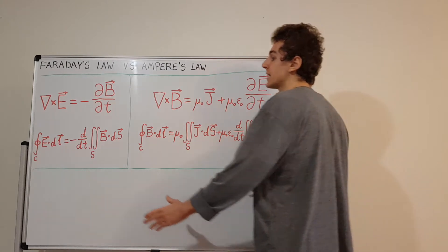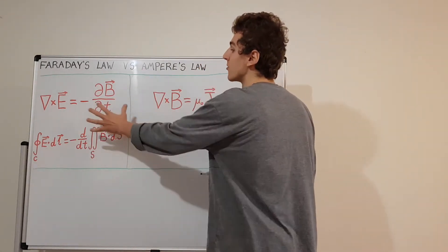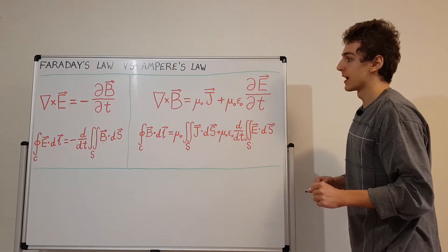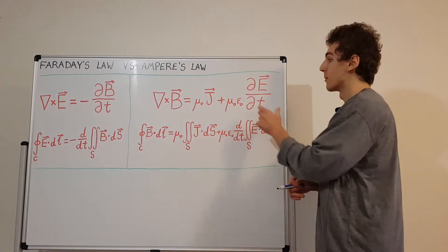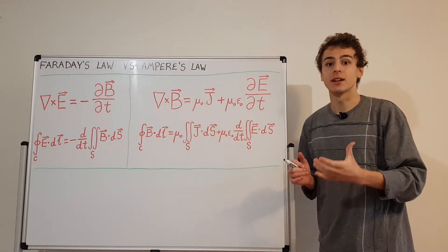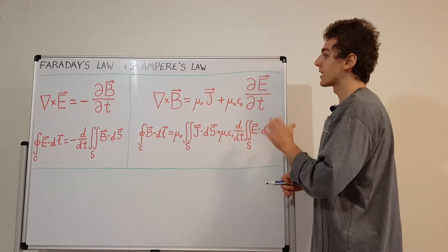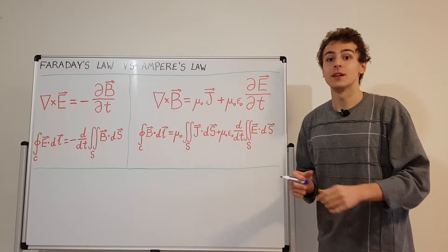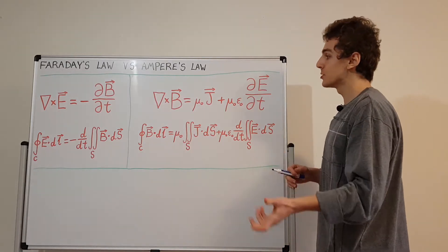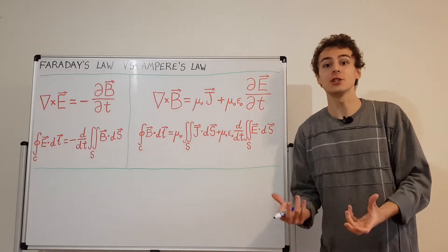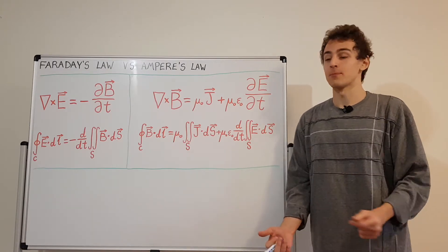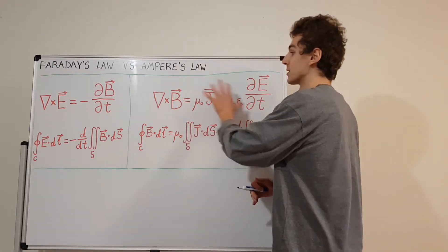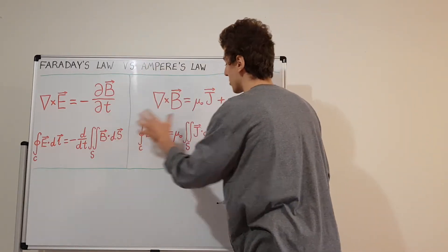Let's look at the left-hand side first — this is Faraday's law of induction — and on the right-hand side we have Ampere's circular law, which also includes Maxwell's modification for the displacement current. We'll look at the differential forms listed at the top and then the integral forms at the bottom.